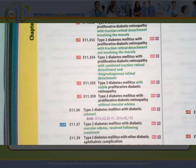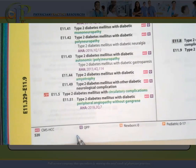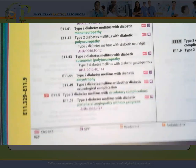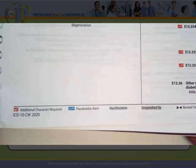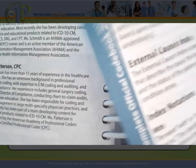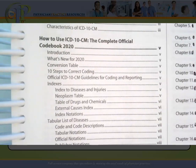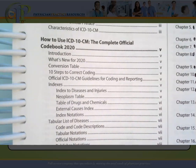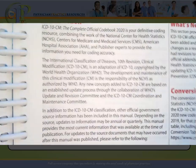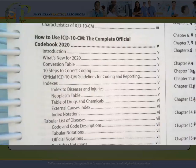One of the other things you'll notice is that at the bottom of each page there are different symbols — HCC, Q, N, P, M, A — indicating additional character required, placeholder alert, manifestations, unspecified diagnoses, and other things. You're probably wondering where they explain all that. Up front on Roman numeral page one, there's an area called 'How to Use the ICD-10-CM Official Code Book.' I recommend reading through that because it will introduce you to the book and to the different symbols and notations you're going to see in the manual.